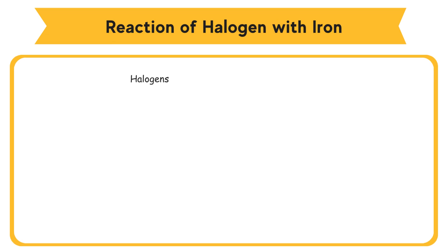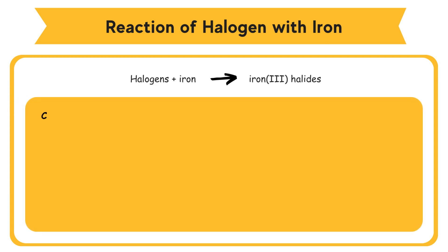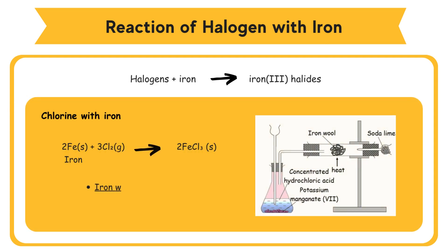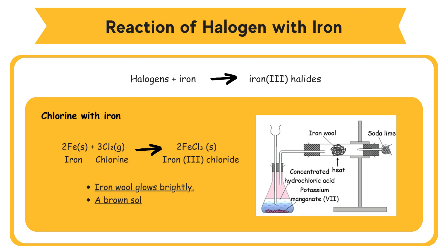Reactions of halogens with iron: halogens form iron(III) halides when they react with iron. For chlorine with iron: iron glows brightly and a brown solid is formed. Iron reacts with chlorine to form iron(III) chloride.